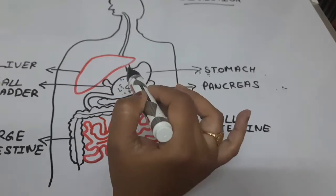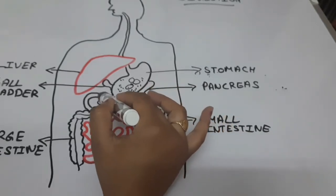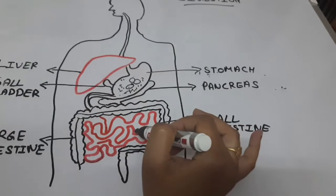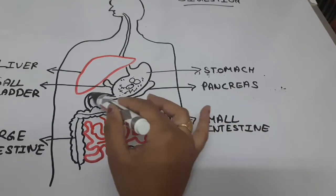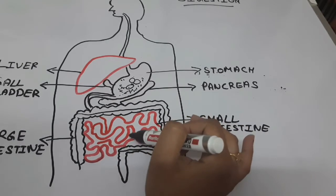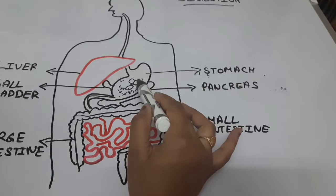Then this food enters into the small intestine. Now when the food paste is formed, then it goes to the small intestine.